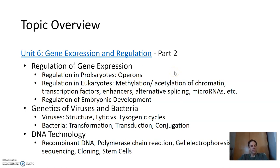We then looked at the genetics of viruses and bacteria. So we looked at just what is a virus, first of all, because it's not quite a cell. It's not a cell at all, actually. And then we looked at how they reproduce through the lytic and lysogenic cycles. For bacteria, we looked at how transformation, transduction, and conjugation are all ways that they have of exchanging DNA and creating genetic diversity. Then, finally, we looked at DNA technology. So creating recombinant DNA, the polymerase chain reaction, gel electrophoresis, DNA sequencing, cloning, stem cells.